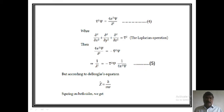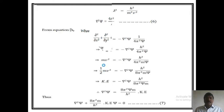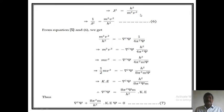According to de Broglie's equation, λ = h/mv. Squaring both sides, λ² = h²/m²v², so 1/λ² = m²v²/h². This is equation number 6. From equations 5 and 6, we get: m²v²/h² = −∇²ψ × (1/4π²ψ). This implies m²v² = −∇²ψ × (h²/4π²ψ).